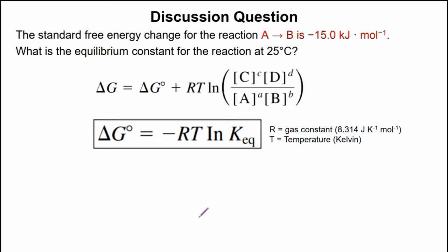Let's look at this problem here with the standard free energy change. A problem is given to us. A is converted to B, releasing or we have a change of negative 15 kilojoules per mole of the reactant to product. The question asks, what is the equilibrium constant for the reaction at 25 degrees Celsius?